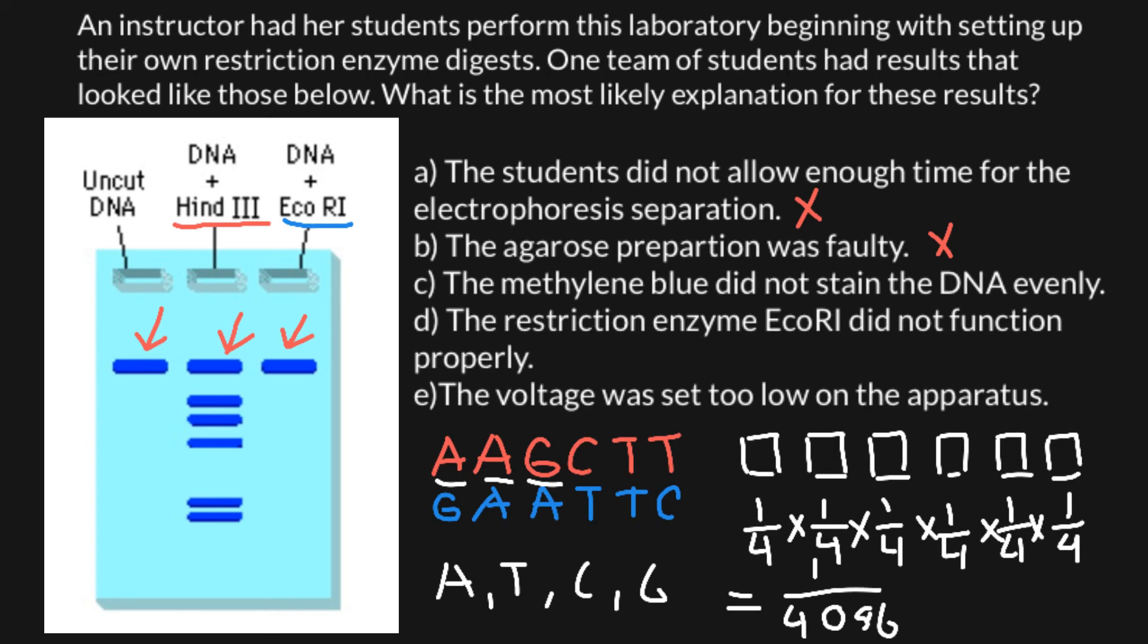Variant C: the methylene blue did not stain the DNA evenly. Also not the case, because we see that all the bands stained evenly, and we shouldn't expect any loss of bands here due to this problem.